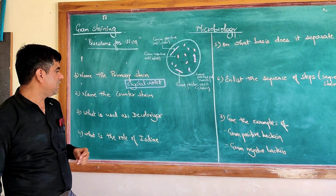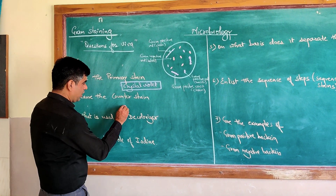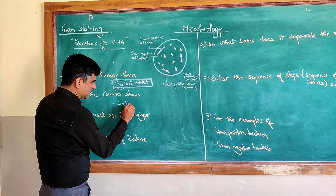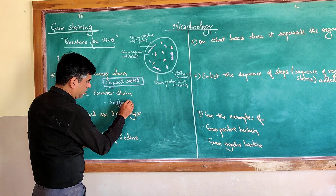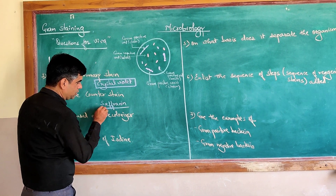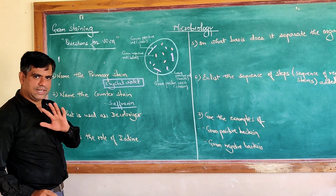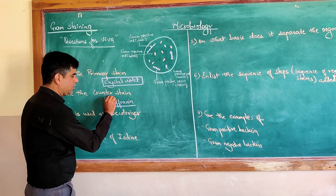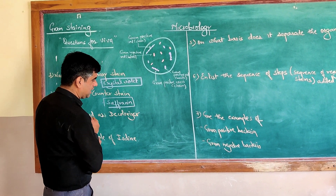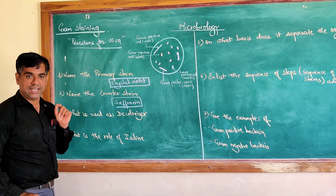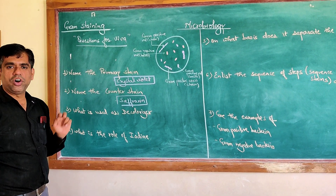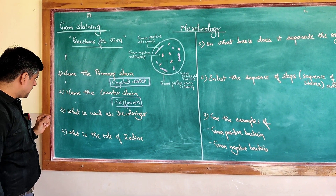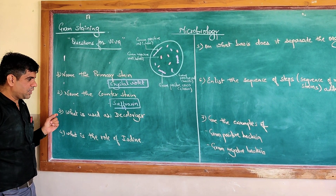The second question: name the counter stain. The counter stain, which you apply at the end, is safranin. Very rarely some people use carbolfuchsin, but the most commonly used counter stain is safranin.